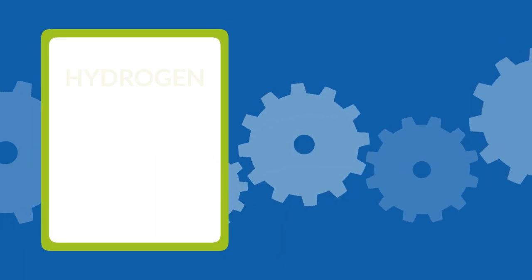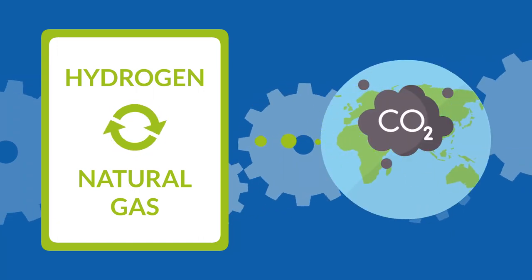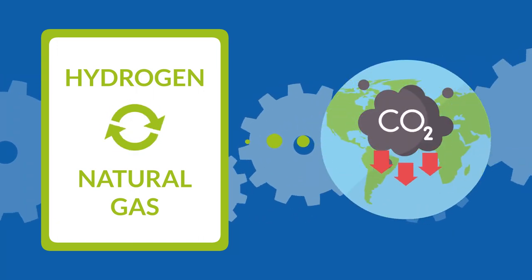In this context, blending hydrogen with natural gas is an important component that can accelerate current decarbonization plans to mitigate climate change. However, there are two key challenges.